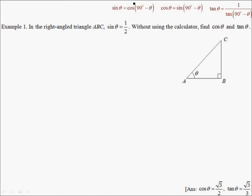Welcome to example 1. In the figure given over here, we have a right-angled triangle ABC where sinθ is equal to half. Since sinθ is equal to half, this side which is the opposite is 1 and this side over here which is the hypotenuse has got to be 2, because sinθ is opposite over hypotenuse.